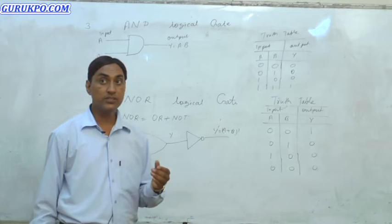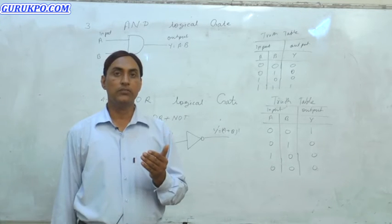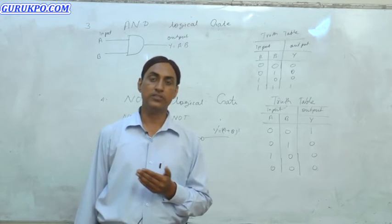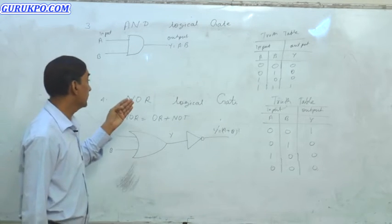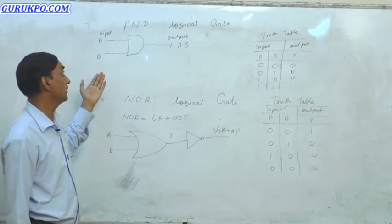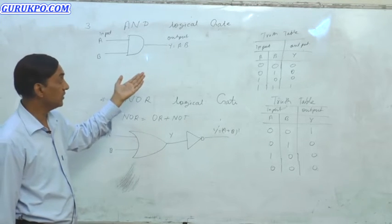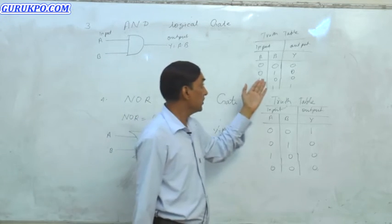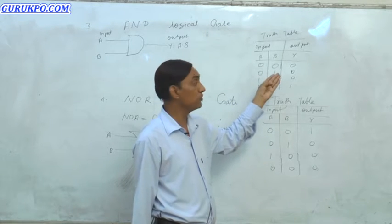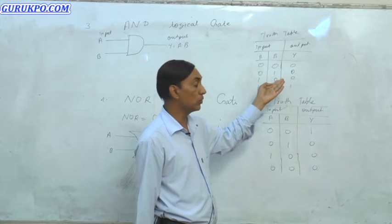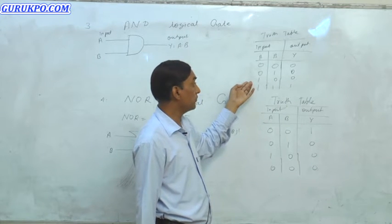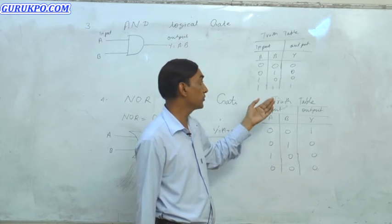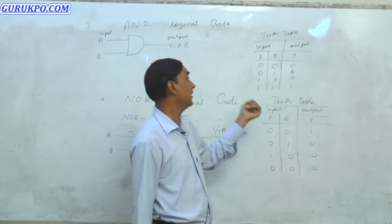Now we discuss our third point, the AND logic gate. This is the symbol of the AND logical gate. There are two inputs, A and B, and the output is Y. Truth table: if inputs are 0 and 0, output is 0; if inputs are 0 and 1, output is 0; if inputs are 1 and 0, output is 0; if inputs are 1 and 1 (high and high), then we get output 1, meaning high output.